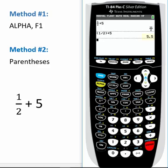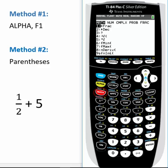The calculator returns an answer in decimal form, 5.5. To change this answer to a fraction, select the math button, which is located below the alpha button, then select option 1 by pressing the number 1 or just selecting enter.